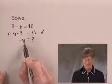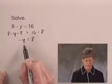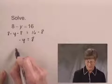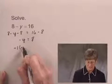Now the opposite of y I can think of as negative 1 times y, and if I multiply that by negative 1, I would get y. So I'm going to multiply on both sides by negative 1.